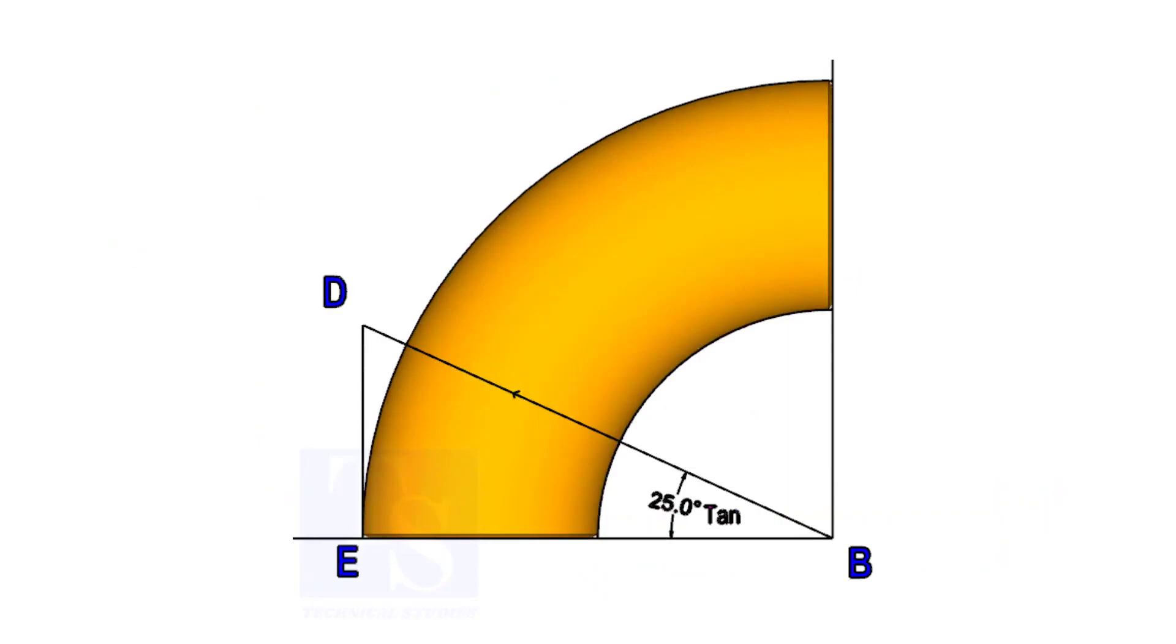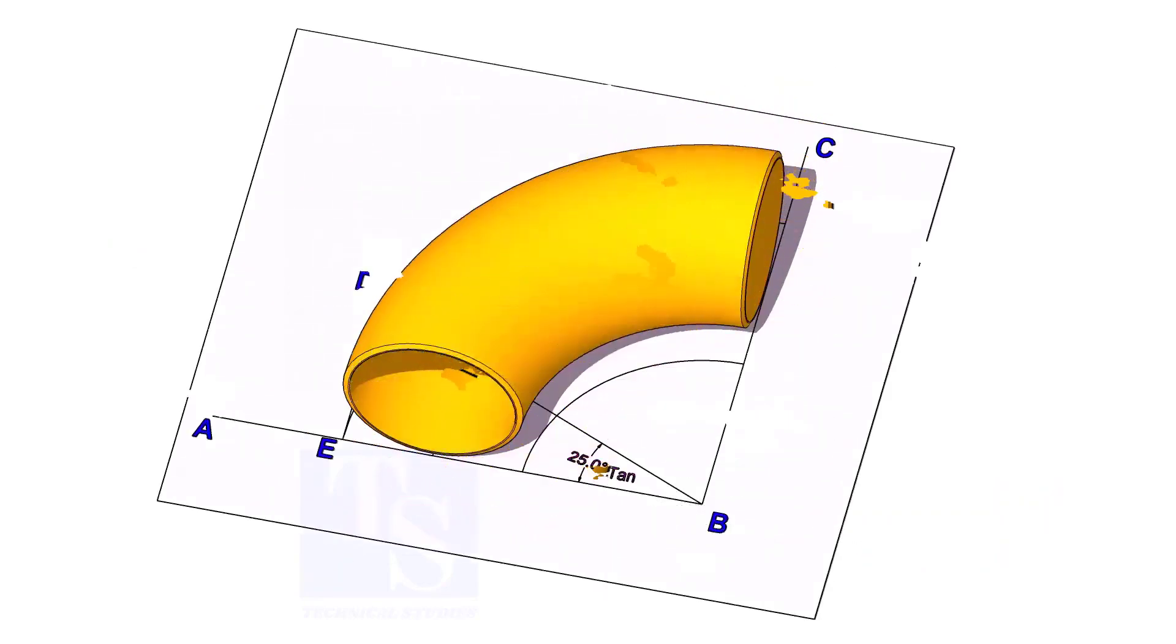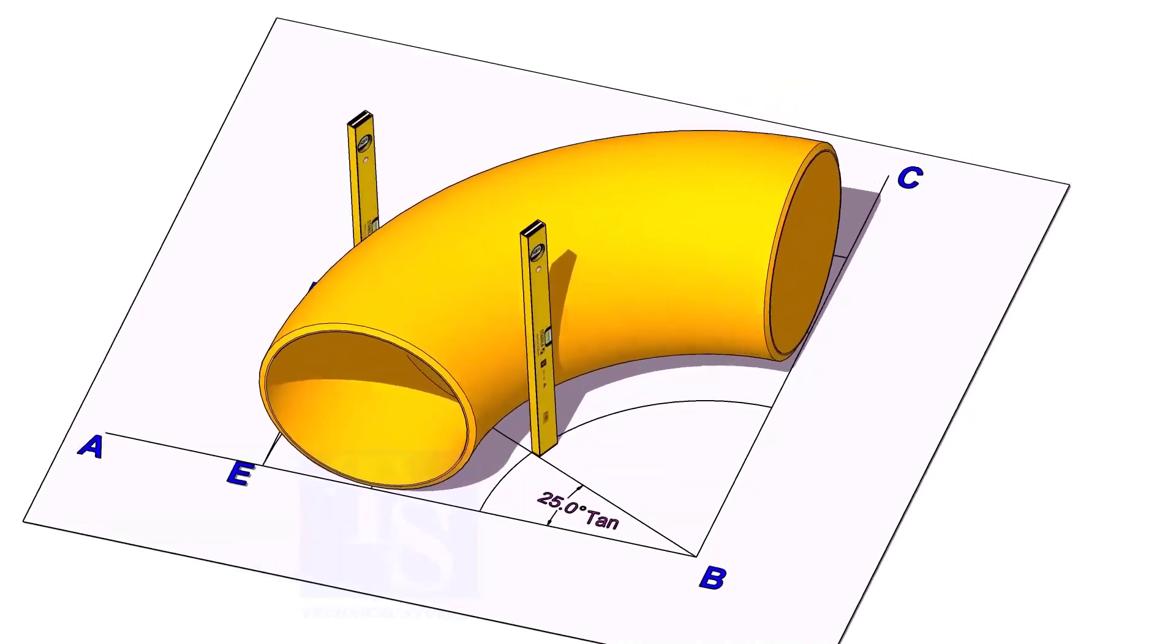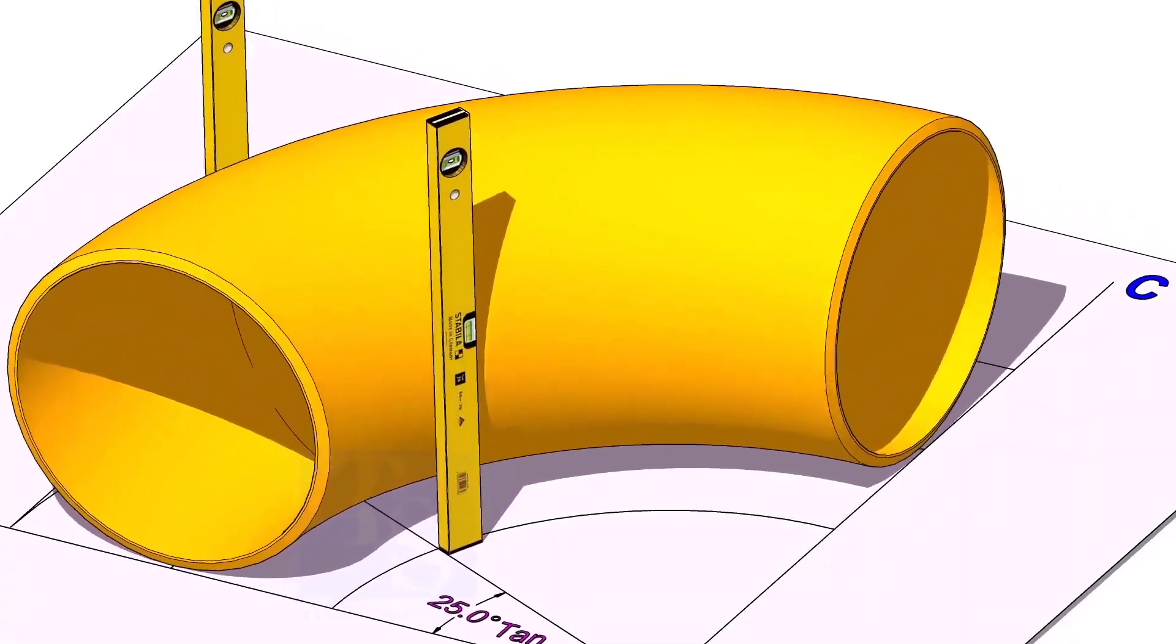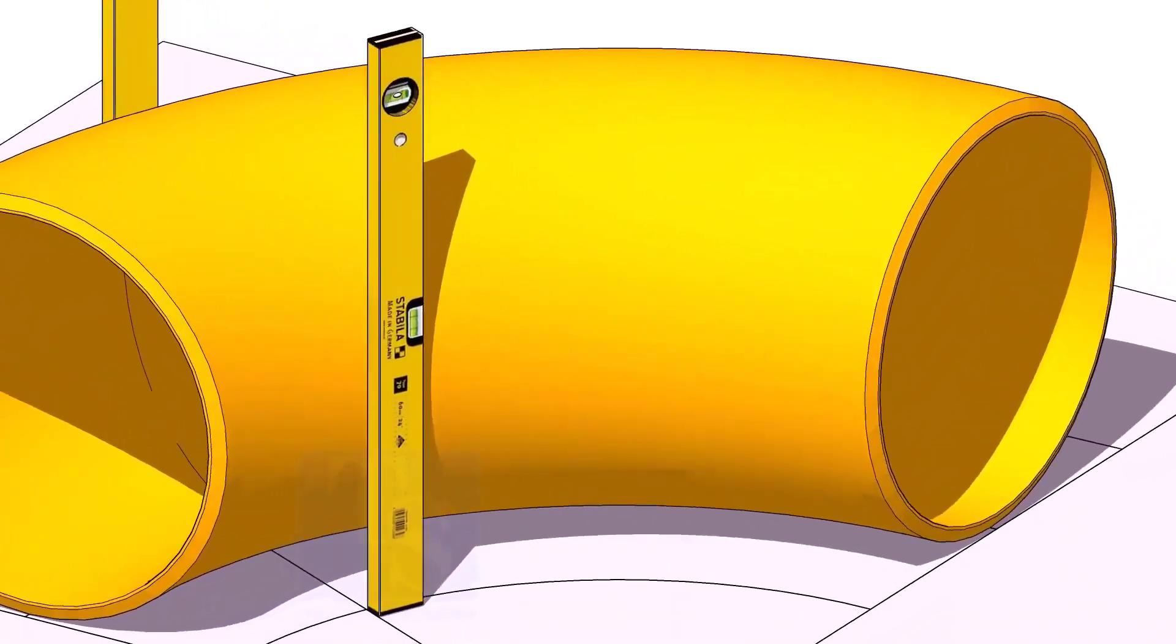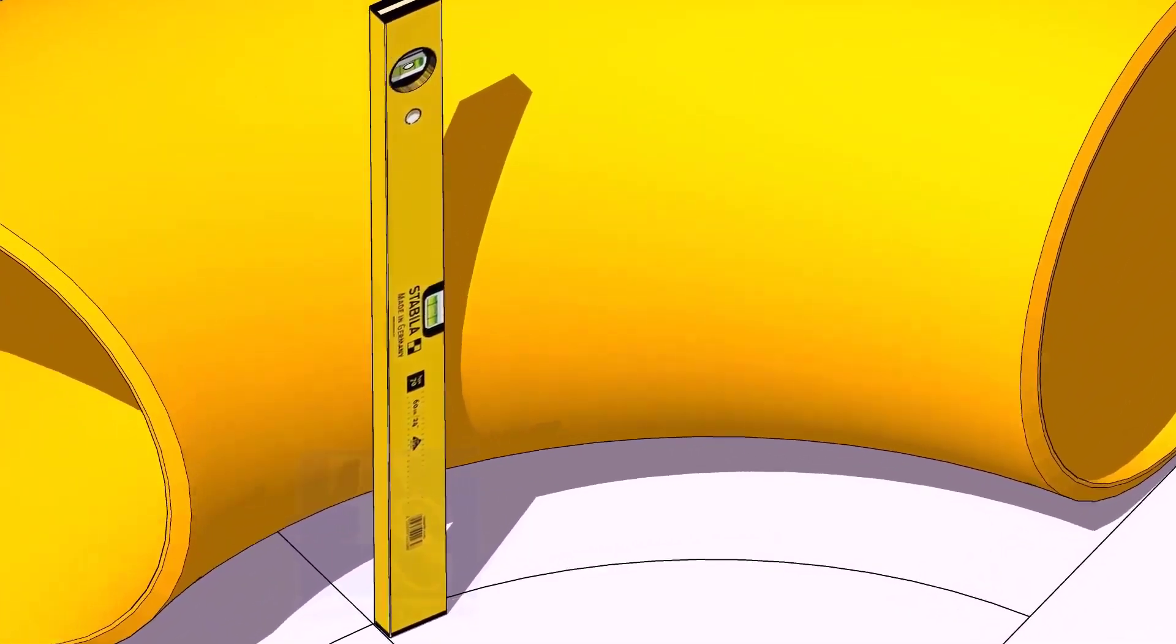Now, put the elbow exactly on the layout as shown. Hold two large level bottles at the edge of the elbow on both sides vertically. And strike a mark where the level bottle edge touches the elbow.